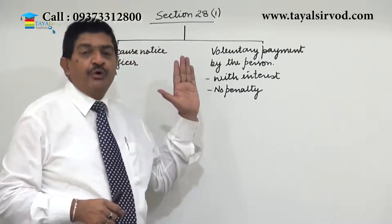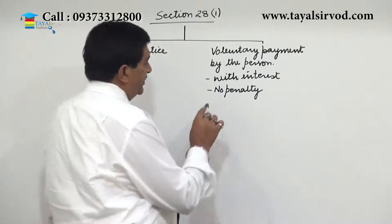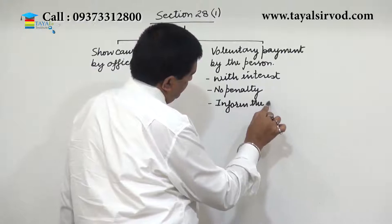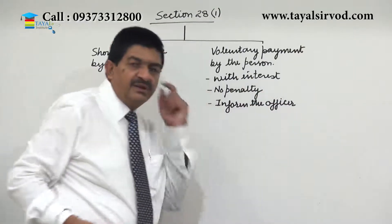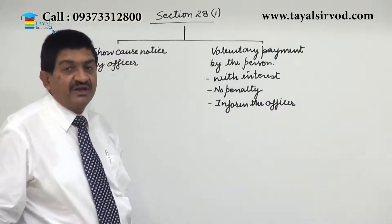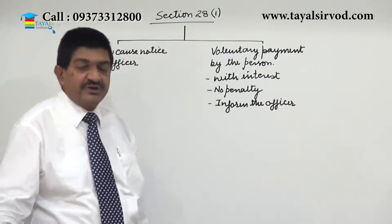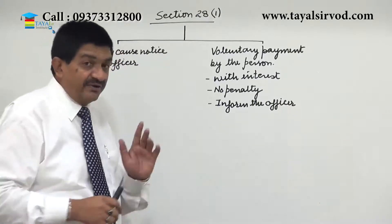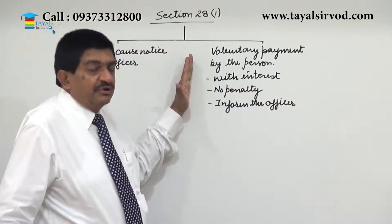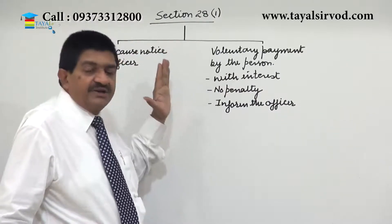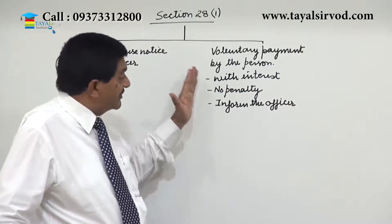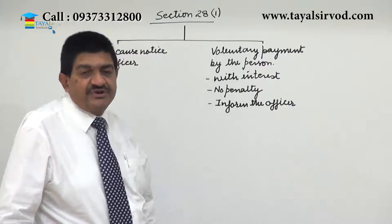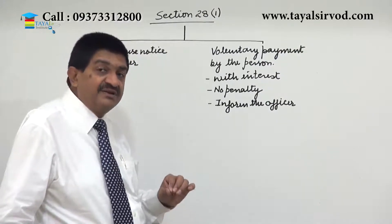When the person makes a voluntary payment, he should inform the officer in writing. The date of that information becomes the relevant date. So the date on which information is given will become the relevant date. I'll explain what the relevant date is and why it is important. So if a person liable to pay determines that a certain amount of duty is payable and pays that with interest on his own — even before the show cause notice is issued — no penalty will be levied, but he must inform the officer in writing, and the date on which this information is given becomes the relevant date.